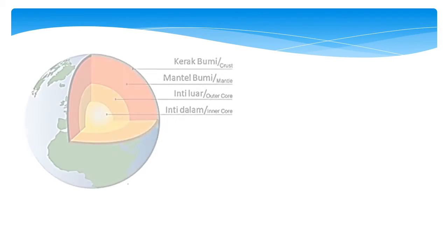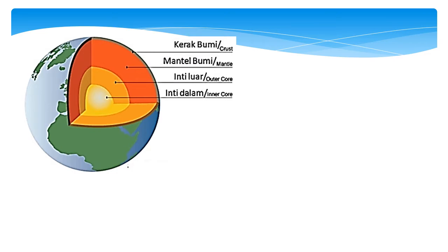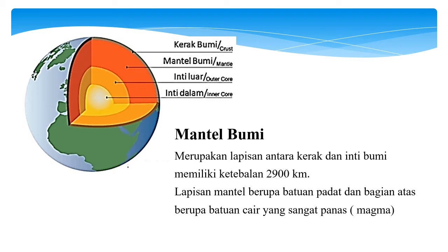Lapisan bumi yang selanjutnya adalah mantel bumi. Lapisan mantel atau selubung atau selimut merupakan lapisan antara kerak dan inti bumi. Lapisan ini memiliki ketebalan 2.900 km, berupa batuan padat, dan bagian paling atas berupa batuan cair yang sangat panas yang disebut magma. Magma ini akan keluar ke permukaan bumi pada saat terjadi gunung api meletus. Suhu di bawah mantel bumi mencapai 3.000 derajat Celsius.